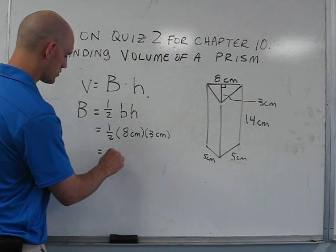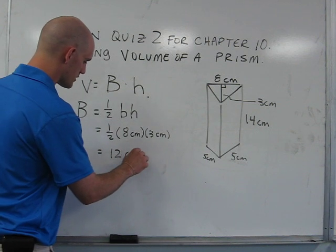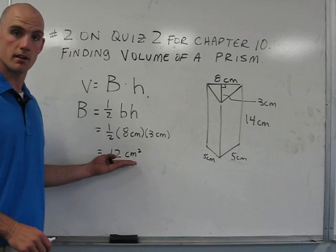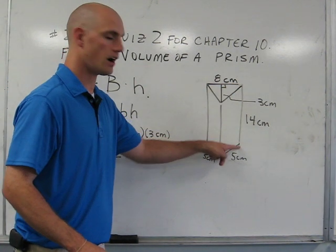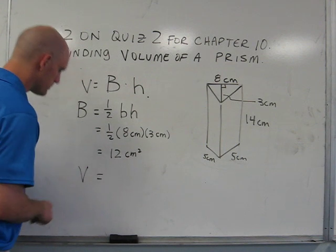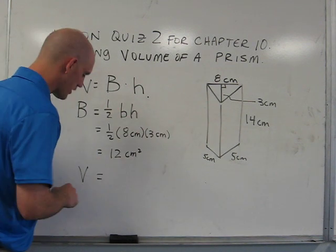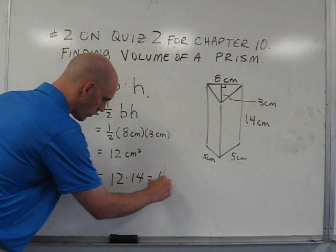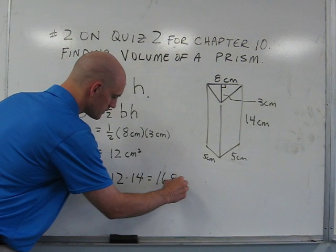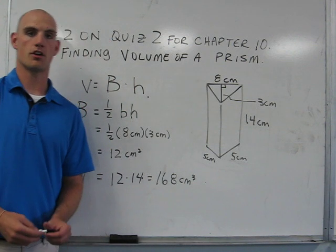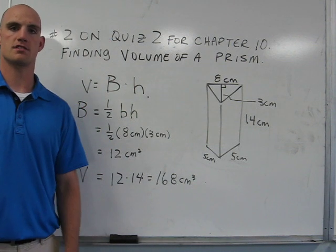That gives us 12 centimeters squared. We then have to take our 12 centimeters squared and multiply it times the height of the prism. And we get the volume of the triangular prism is equal to 12 times 14, or 168 centimeters cubed, because volume is always in units cubed.